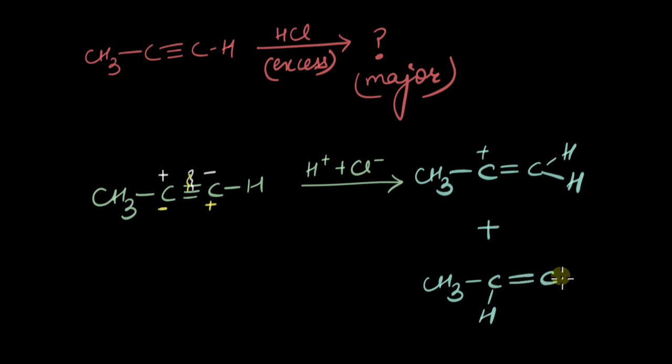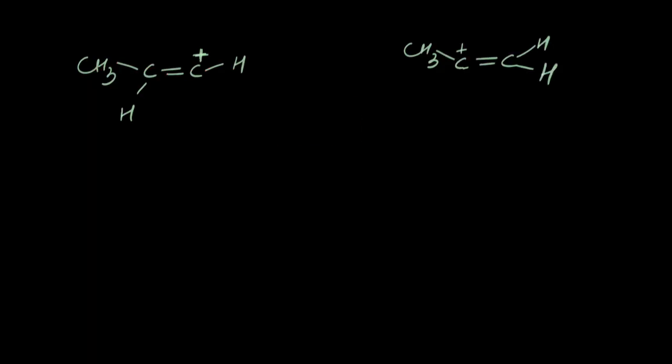Which one of the two would be more stable? Because if we find the stable one, we'll figure out where the reaction would be driven more. Let's compare these two carbocations. In each case it's a vinylic carbocation. There's no possibility of resonance - the positive charge is present on the carbon involved in the formation of a double bond. The left one is a one degree vinylic carbocation while the right one is a two degree vinylic carbocation.